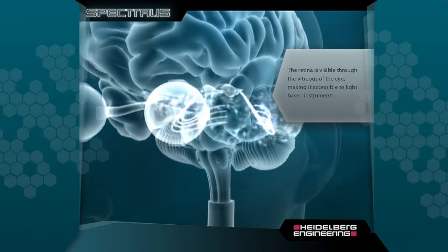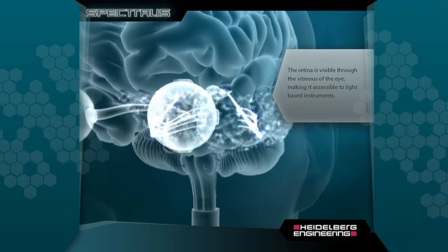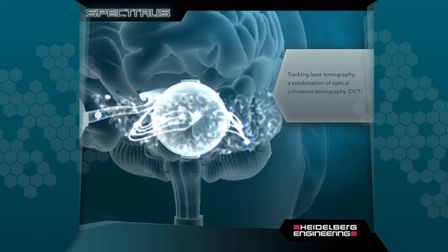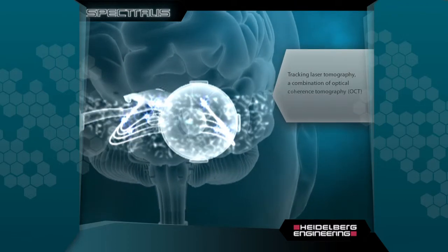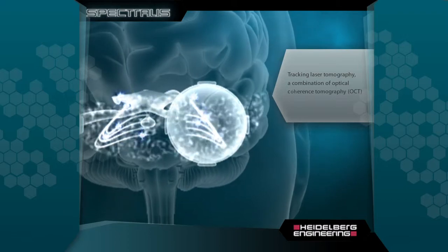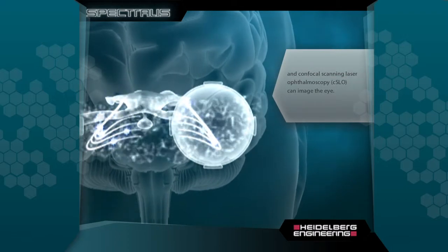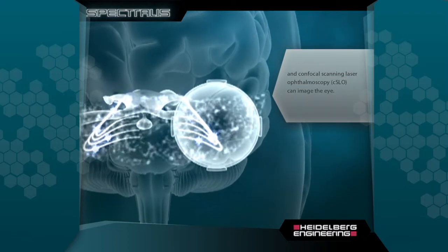The retina is visible through the vitreous of the eye, making it accessible to light-based instruments. Tracking laser tomography, a combination of optical coherence tomography and confocal scanning laser ophthalmoscopy, can image the eye.